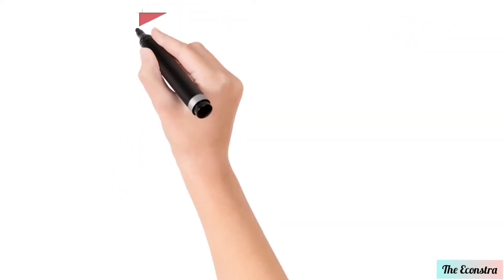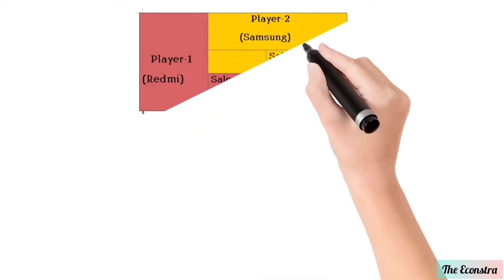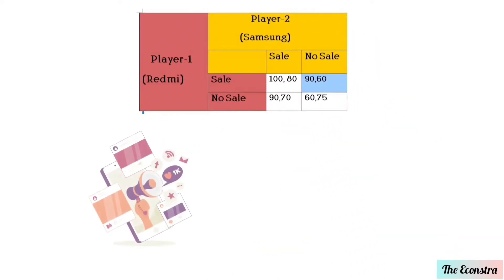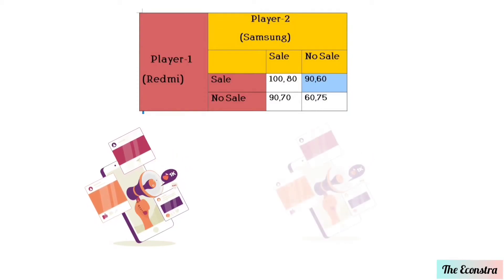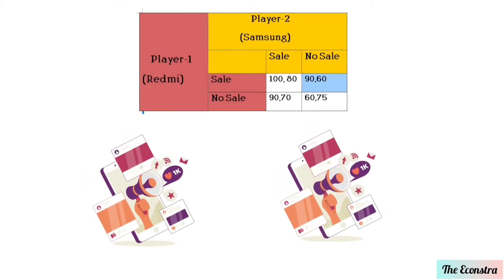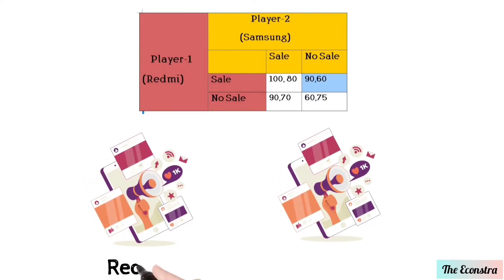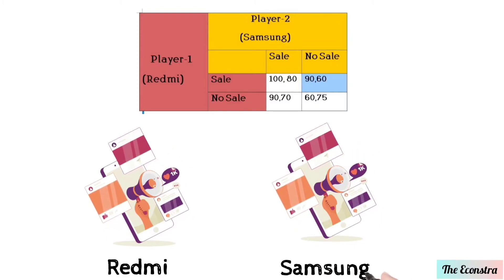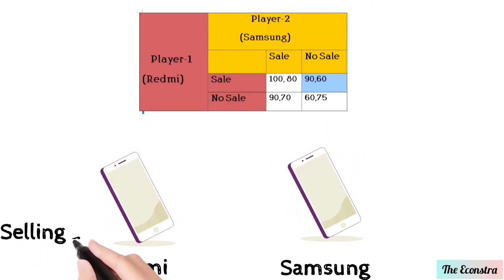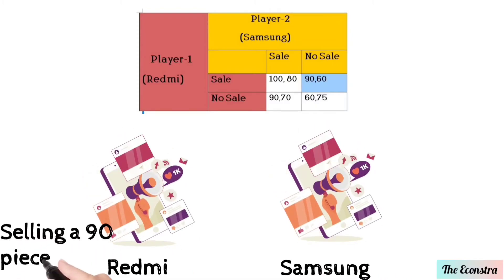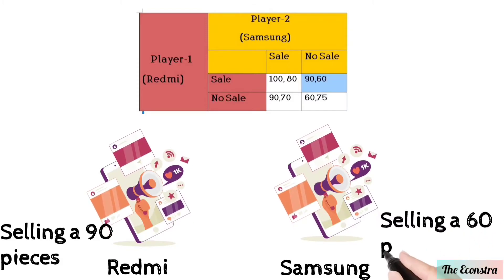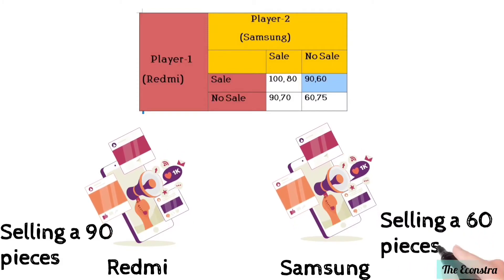In the second condition, Player One is on sale and Player Two is not on sale. Player One sells 90 goods and Player Two sells 60 goods.